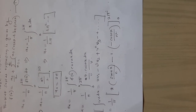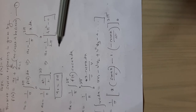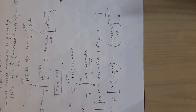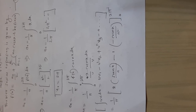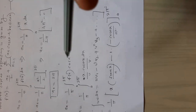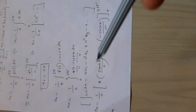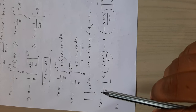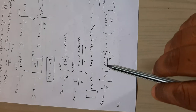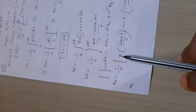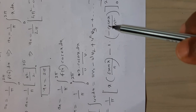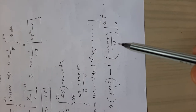Now we will find the value of an. We write the formula for an and put the value of f(x). Here we are finding the integration of a product of two functions. We arrange the terms according to the ILATE rule, where x is u and cos(nx) is v, and apply the generalized integration by parts. Writing 1/π as is: first term x, integration of the second term sin(nx)/n, minus derivative of x which is 1, times the integration of sin(nx)/n which is -cos(nx)/n², between limits 0 to 2π.